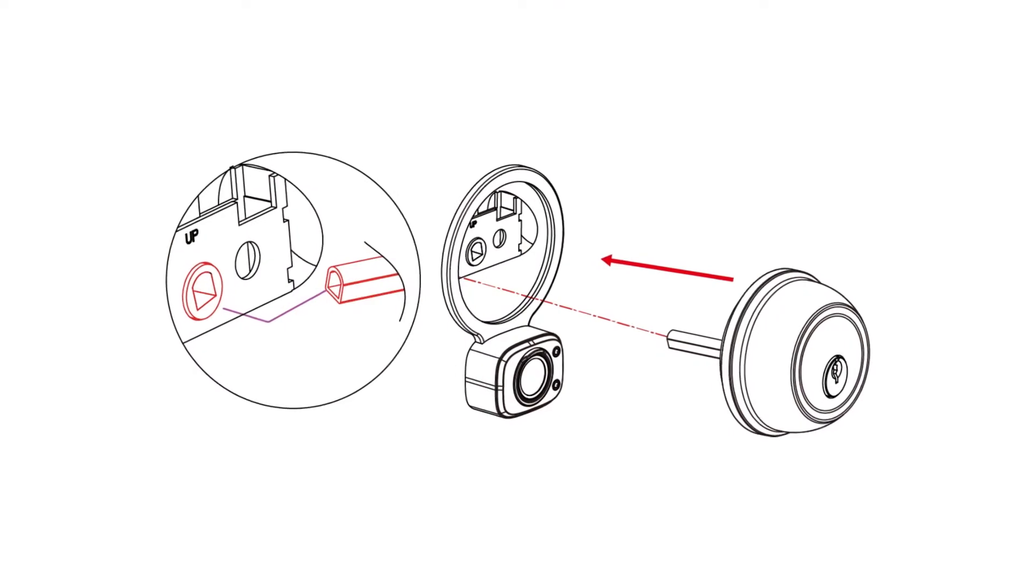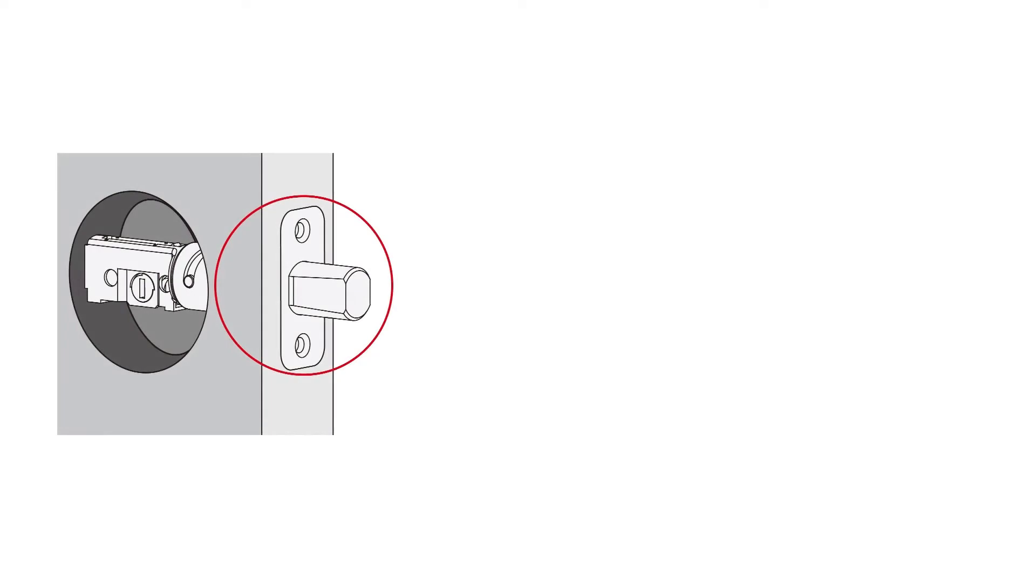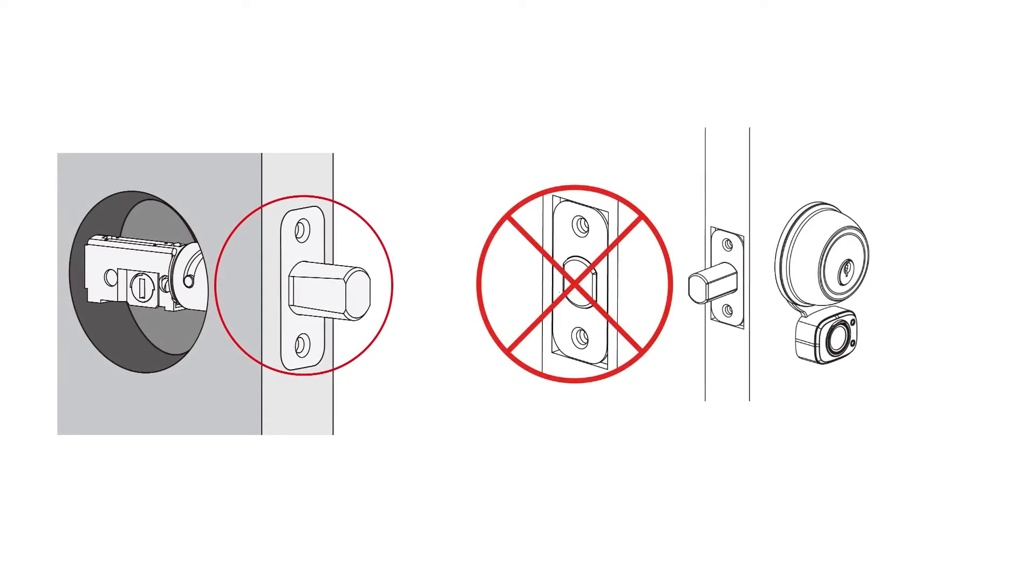Installing the exterior lock: Make sure the deadbolt is extended. Reinstall exterior lock ensuring torque blade and lock are in the correct orientation. Check to make sure the deadbolt remains fully extended. If needed, use a screwdriver or pliers to fully extend.